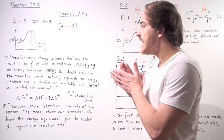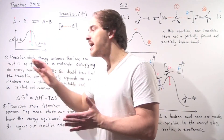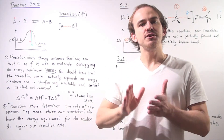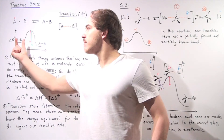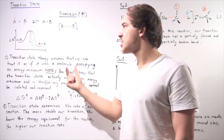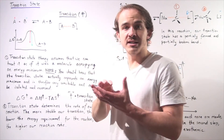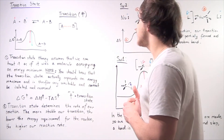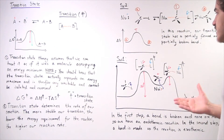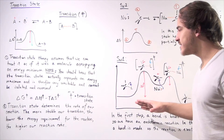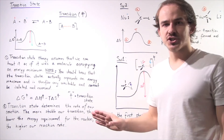Even though we can treat the transition state as if it were an energy minimum, it actually isn't. It's an energy maximum — the highest point when going from initial reactants to products. We cannot actually isolate the transition state or put it in a bottle and study it the way we can study reactants and products. Now let's examine two examples and look at their transition states.